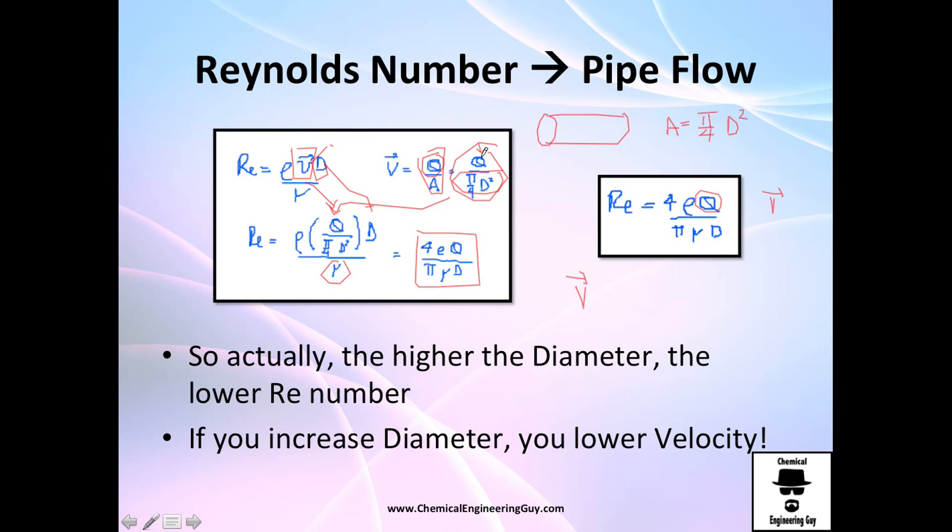Having the volumetric flow rate and calculating the velocity, we can go and check out directly with this formula. This is valid only on circular cylindrical pipes.